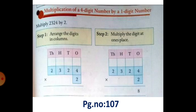In your concept book, page number 107. Ok children, let us see how to multiply 4-digit number by a 1-digit number. So multiply 2324 by 2.